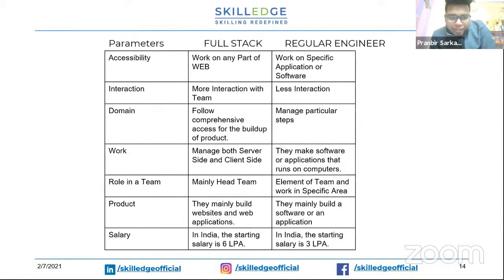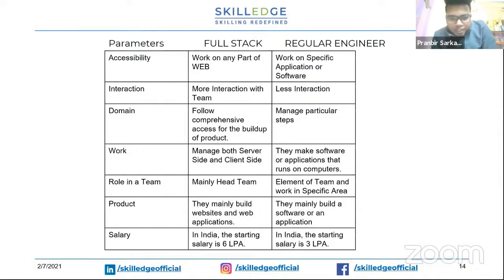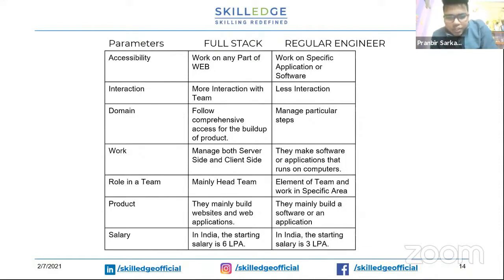The interaction parameter — since a full stack developer works with different technologies, he gets the opportunity to interact with more people in the team. For a regular engineer, the job area is relatively small, so interaction is limited. The domain part is basically an important thing. For comprehensive access during the build-up of products, whenever a company is going to launch a new product, the full stack developer can do brainstorming on what technologies to use and how to build the software.